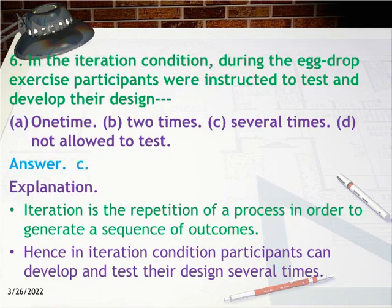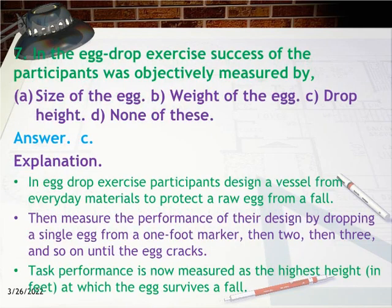Question 6: In the iteration condition during the egg drop exercise, participants were instructed to test and develop their design: a) one time, b) two times, c) several times, d) not allowed to test. Answer: C. Explanation: Iteration is the repetition of a process in order to generate a sequence of outcomes. Hence, in the iteration condition, participants can develop and test their design several times.